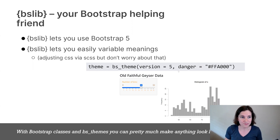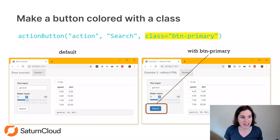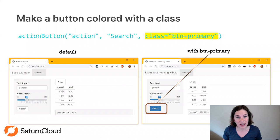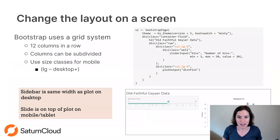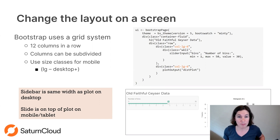We can also directly add classes to lots of stuff in Shiny. If we have an action button, the action button has an extra class command and we can pass an extra CSS class. In this case, the Bootstrap command to make a button a bright color is btn-primary, and that changes the color of the button. We can also use Bootstrap to change the layout of the screen — instead of one little column for input and one big column for output, I can use div classes to change the layout as well. Bootstrap is good for both styling and layout.